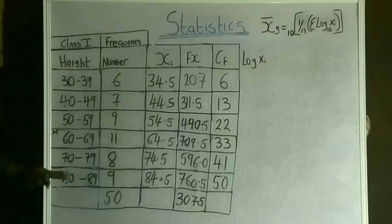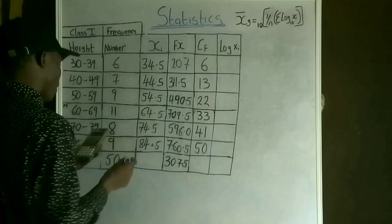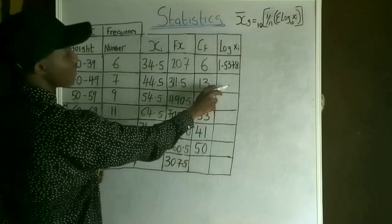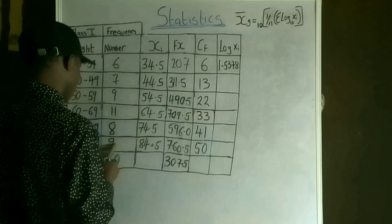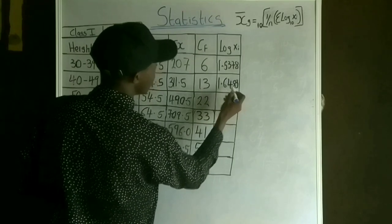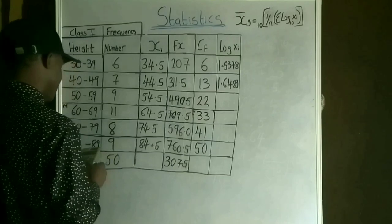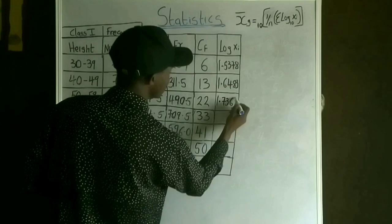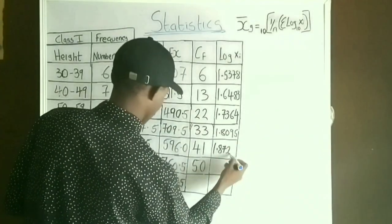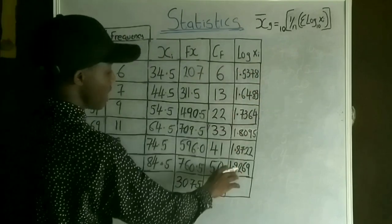To get the summation of log xi: log(34.5) = 1.5378, log(44.5) = 1.6484, log(54.5) = 1.7364. After computing all log xi values, I sum them all together, which gives 10.5.